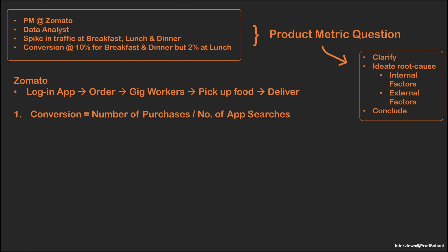Next, over what period of time have you observed this? This has happened over the past six months in a gradual way. Now, what was the conversion rate for lunch before this analysis was done — has it increased for others or decreased for lunch? Conversion rates have been decreasing gradually for lunch time for six months now.